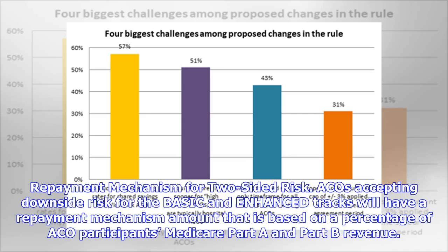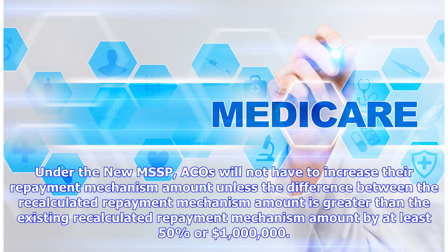Repayment mechanism for two-sided risk ACOs: ACOs accepting downside risk for the Basic and Enhanced Tracks will have a repayment mechanism amount based on a percentage of the ACO participants' Medicare Part A and Part B revenue. Under the new MSSP, ACOs will not have to increase their repayment mechanism amount unless the difference between the recalculated repayment mechanism amount and the existing amount is greater than 50 percent or $1 million dollars.